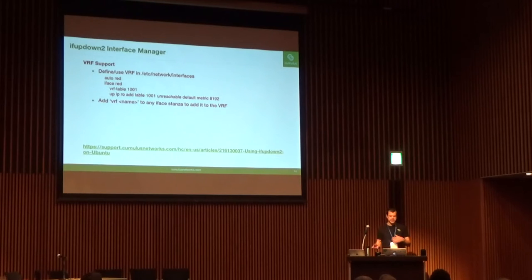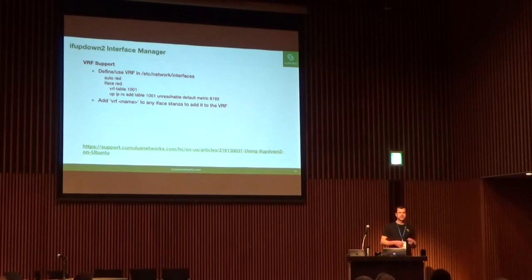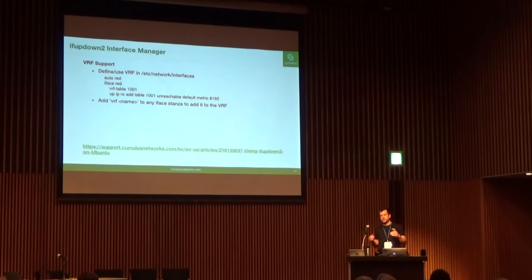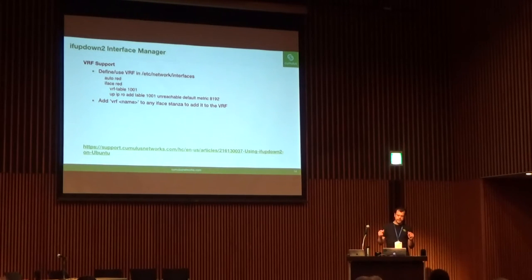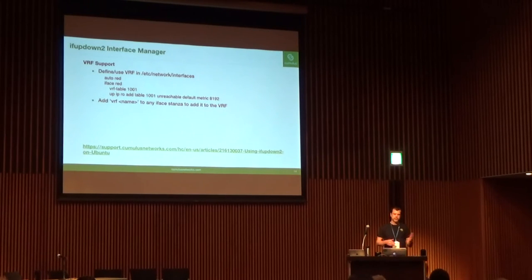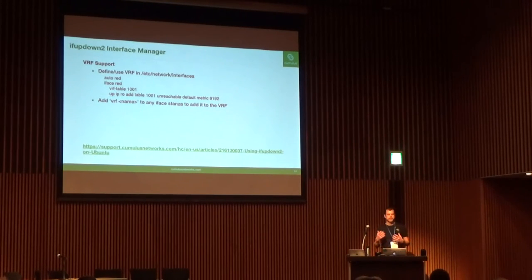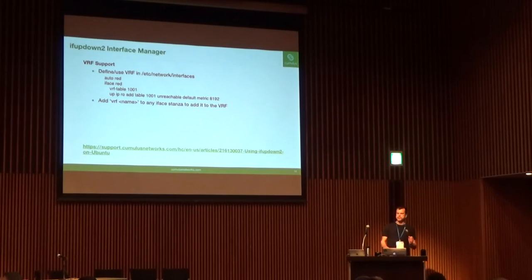Rupa gave a talk on IFUpDown2 yesterday. When it comes to configuring and setting up VRFs, it really is the simplest interface manager — it's got everything needed to configure the host to just work. For IFUpDown2, it's as simple as a handful of lines in the interface config file. For example, auto red, iface red — give it a table ID. I have to manually add my static default route because I don't want lookups to fall from one table to the next, so I have an unreachable default in all my VRFs. Then to make interfaces part of a VRF domain, we just add the VRF name to that interface stanza.